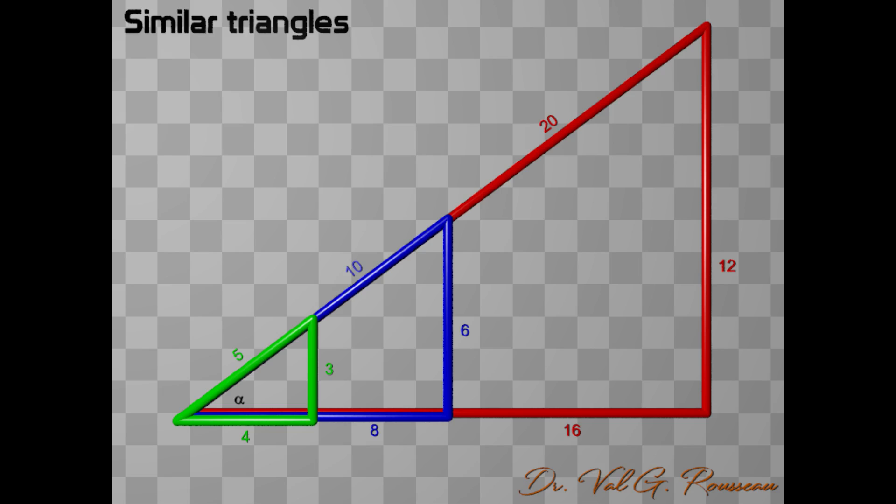Now, you can see something very particular about similar triangles. Although they have different sizes, they have the same angles. We can clearly see it in the case of the angle alpha, for which the corresponding vertices of the three triangles are perfectly superposed. Another particular thing is that the ratios between any two sides' lengths are the same for all similar triangles.